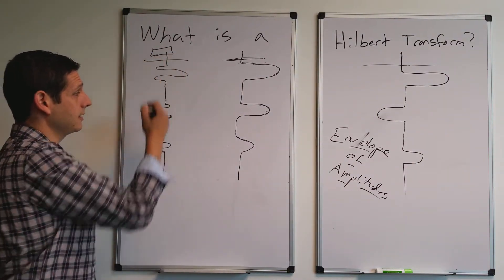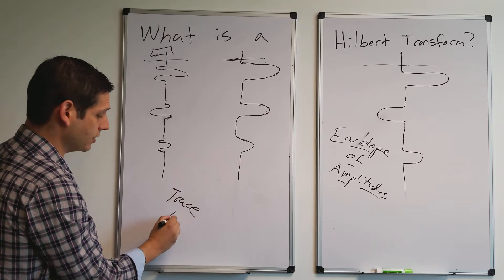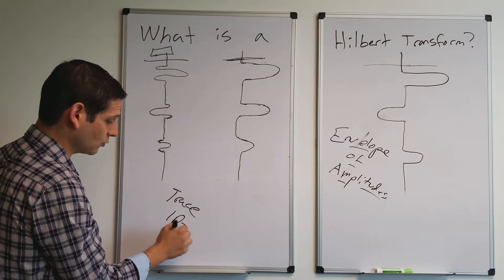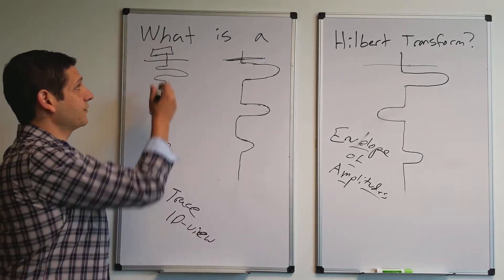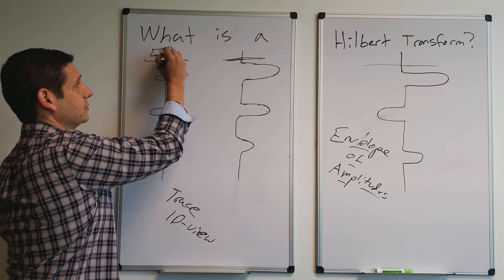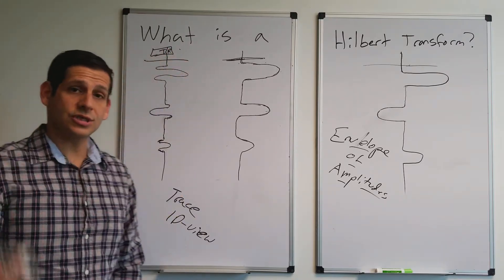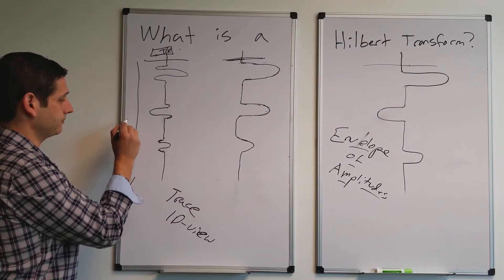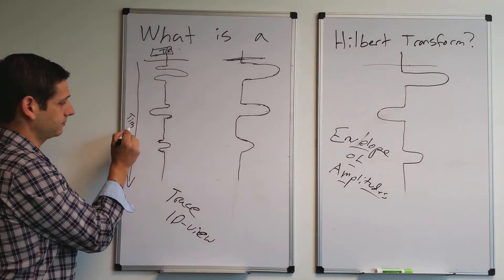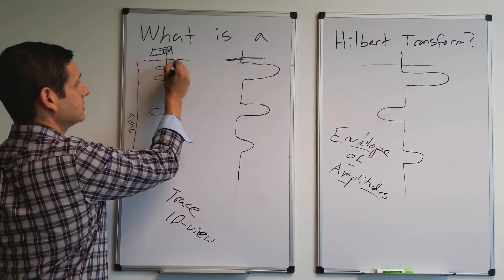This is a trace, okay? A trace is a one-dimensional view, right, one-dimensional view of the subsurface where your antenna is. So this is your transmitter slash receiver. Transmitter receiver produces a signal and basically this then is time going down. This is the ground surface.